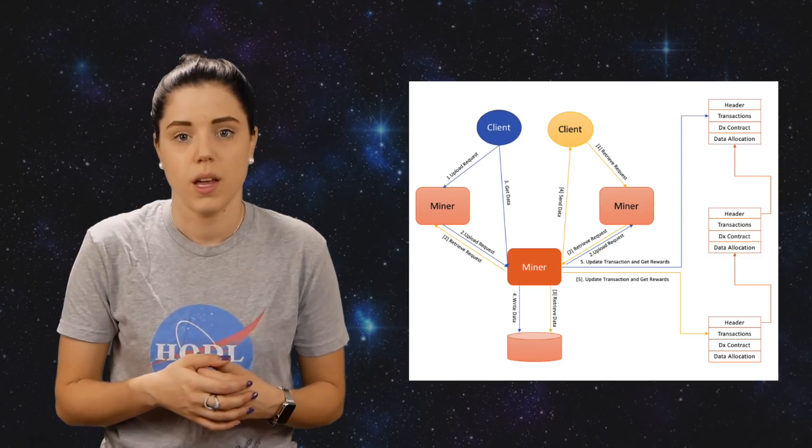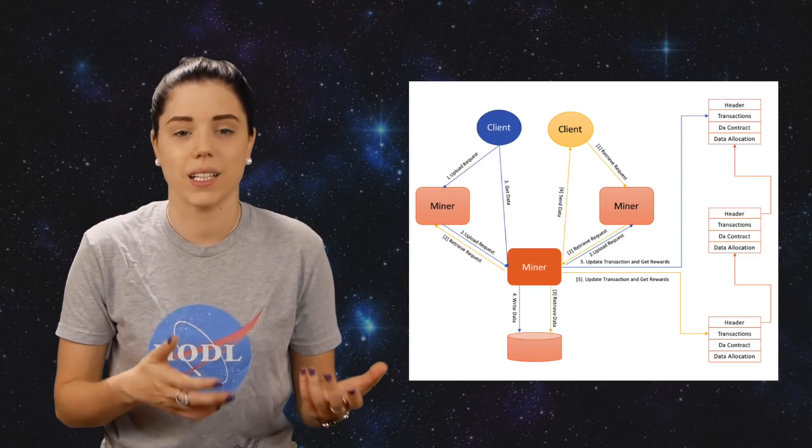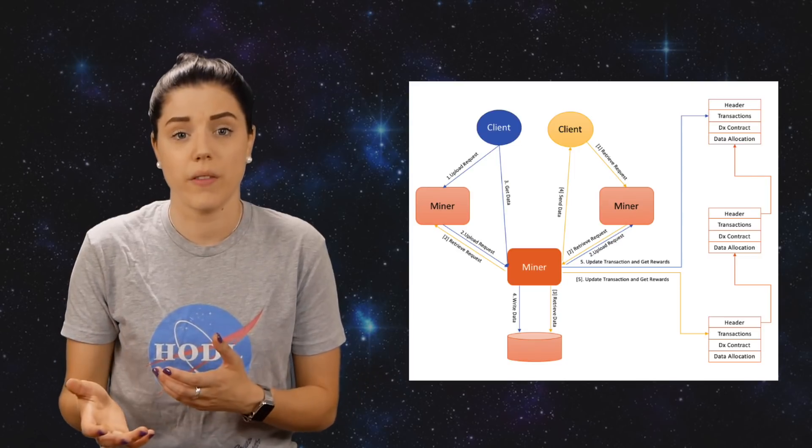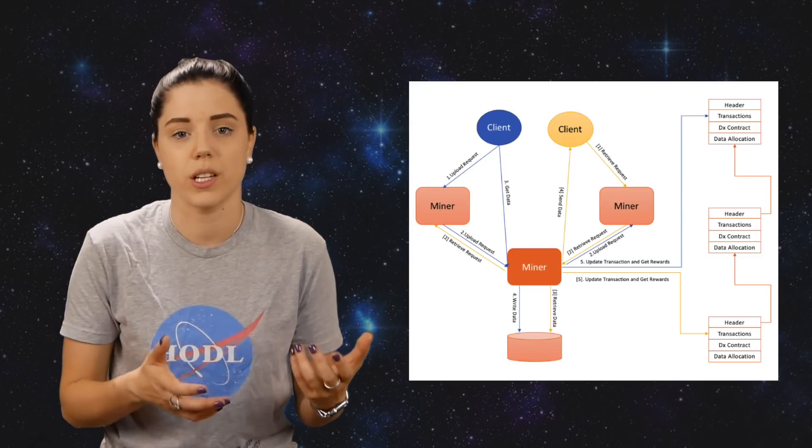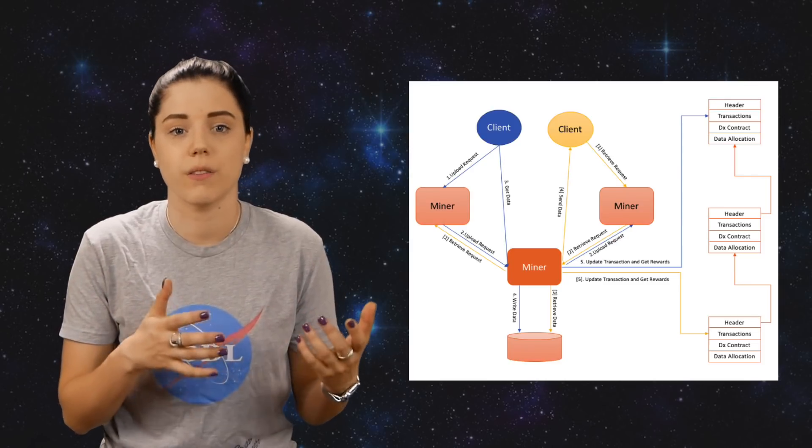Next is a data chain, which is built on a peer-to-peer file storage system and stores all of the non-asset data. It is responsible for providing and settling big data storage, handling privacy issues, and providing support to the computational chain. It's going to utilize proof of space time, or POST, to verify the processes.